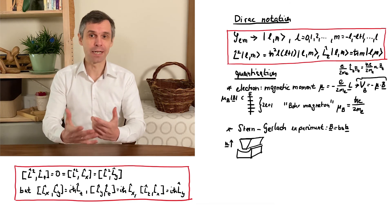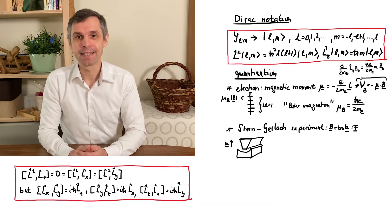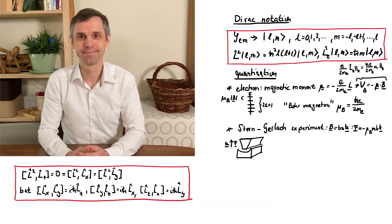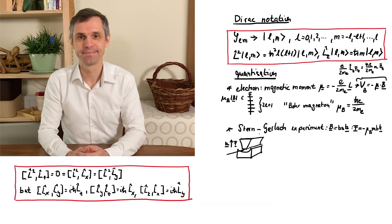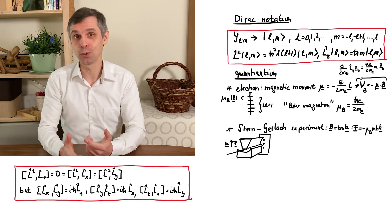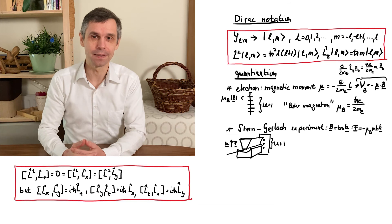So the potential energy now has a gradient, and hence results in a force, and this depends on the magnetic quantum number M. Therefore, when you collect the particles on a screen, you should observe two L plus one spots, that's always an odd number.